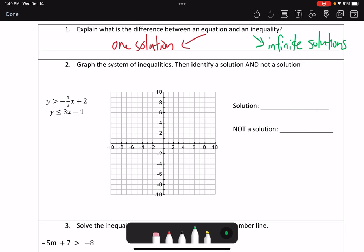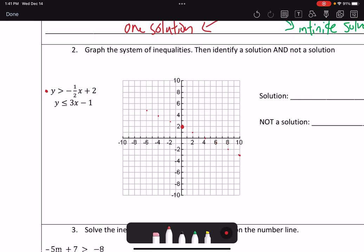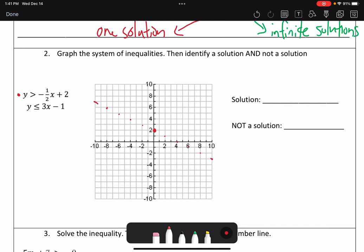So let's graph a system of inequalities, and then we're going to identify a solution and a non-solution. Our first inequality here is y is greater than negative 1 half x plus 2. I'm going to start at the y-intercept of 2, go down 1 to the right 2, or I can go up 1 to the left 2. Before I draw my line, I need to decide if this is going to be a solid or a dashed line. In this case, it's just greater than, so I am going to make a dashed line.